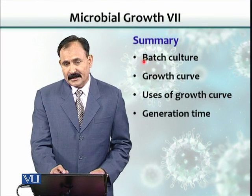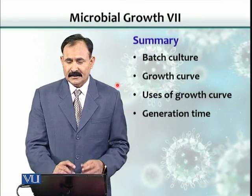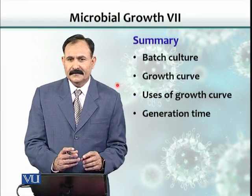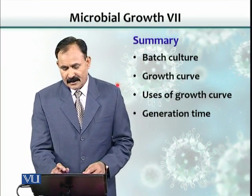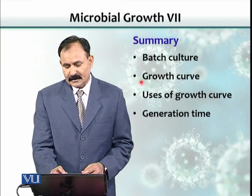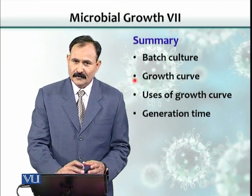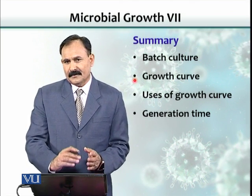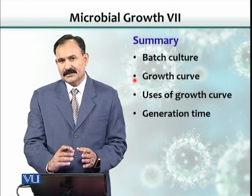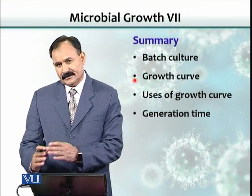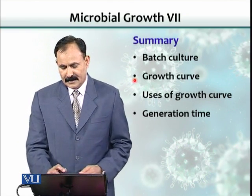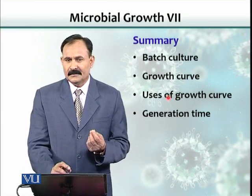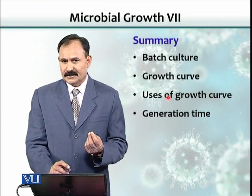In summary, a batch culture is one contained within a vessel where nutrients are not refreshed. The growth curve follows four phases: lag phase, log phase, stationary phase, and decline phase. There are various uses of the growth curve, one of which is the calculation of generation time.